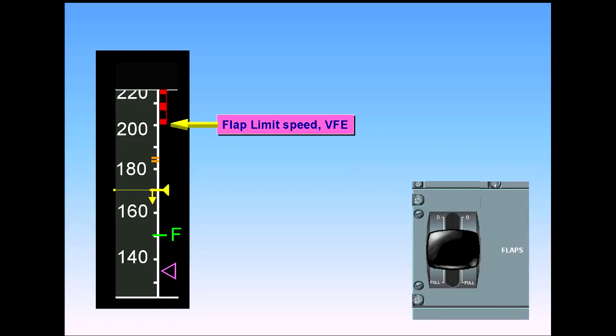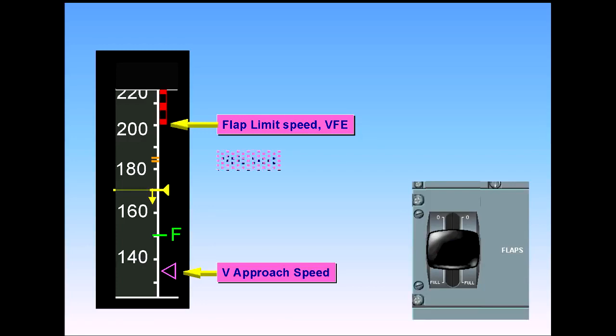Notice that the approach speed target, V-approach, has now appeared as a magenta triangle. The aircraft will continue decelerating toward F-speed. By reducing toward F-speed, the aircraft will be below the VFE for the next flap setting. Flap 3 can now be set.